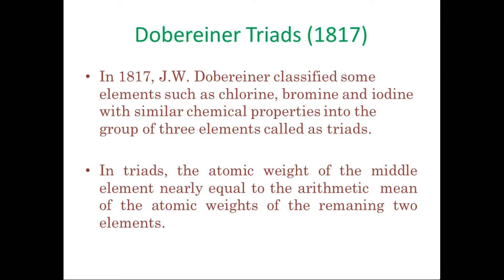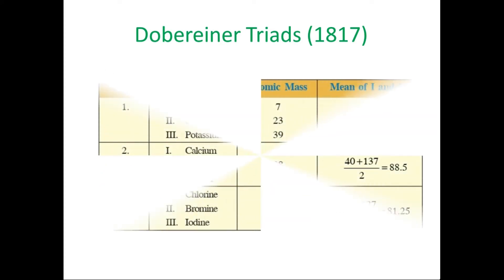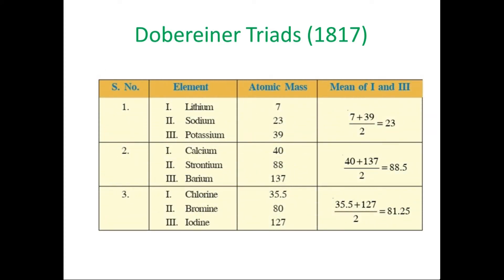The atomic weight of the middle element is nearly equal to the arithmetic mean of the atomic weights of the remaining two elements. For example: Lithium and Potassium — their average gives Sodium's atomic mass. Calcium and Barium — their average gives Strontium. Chlorine and Iodine — their average gives Bromine. The values are not exactly equal, but are nearly the same.